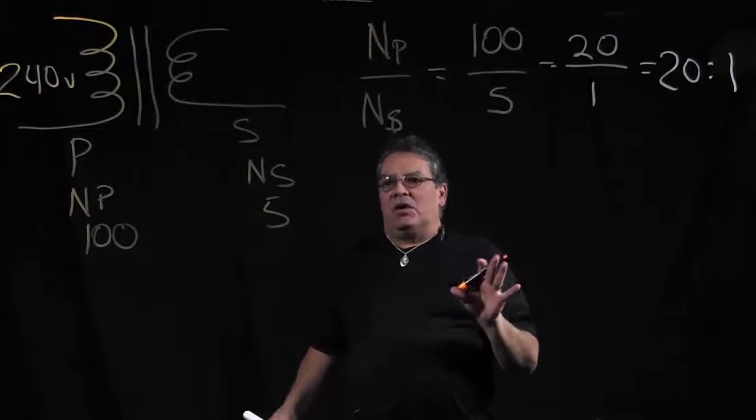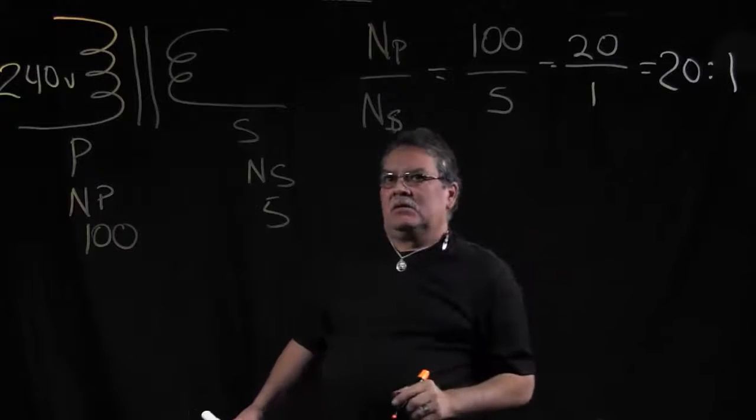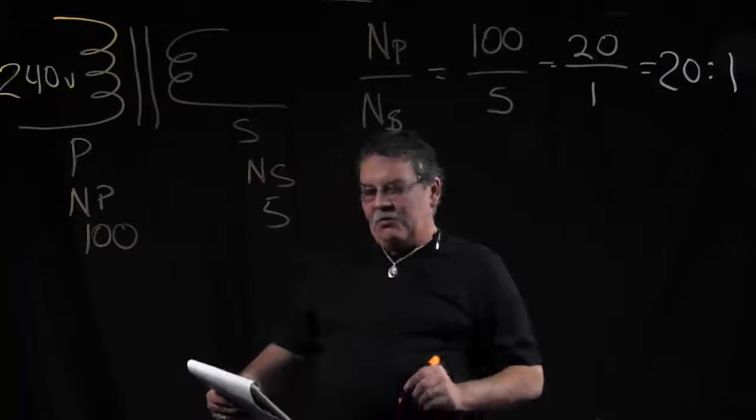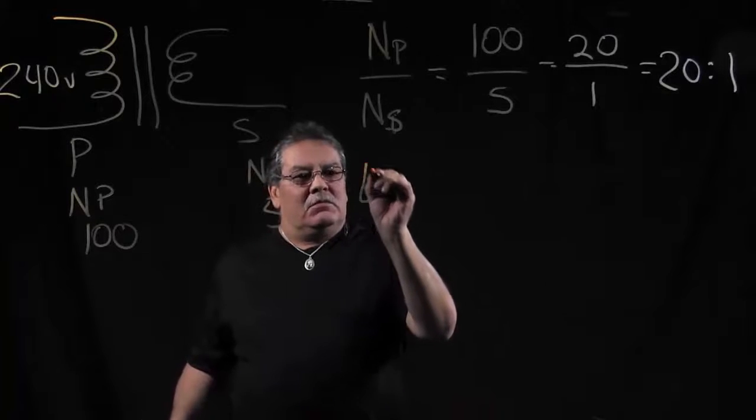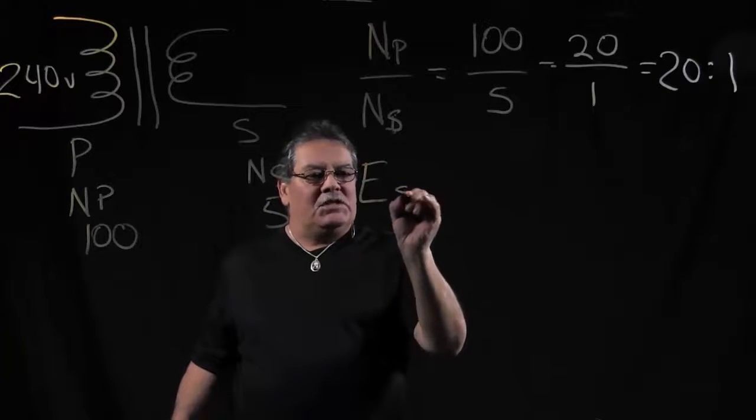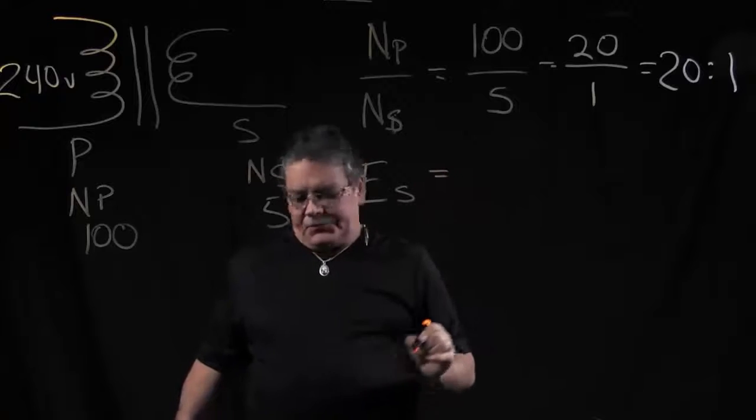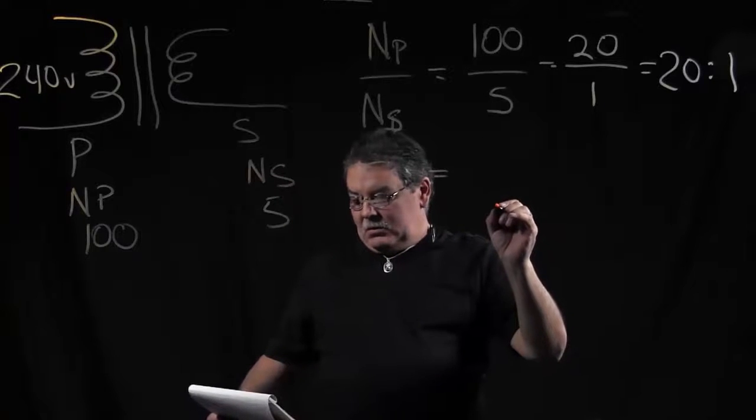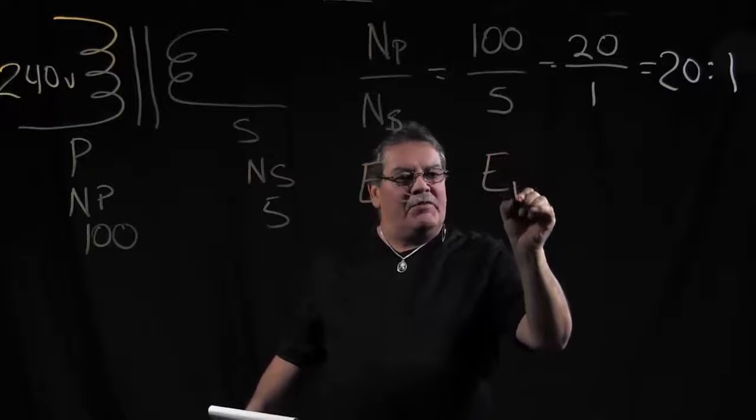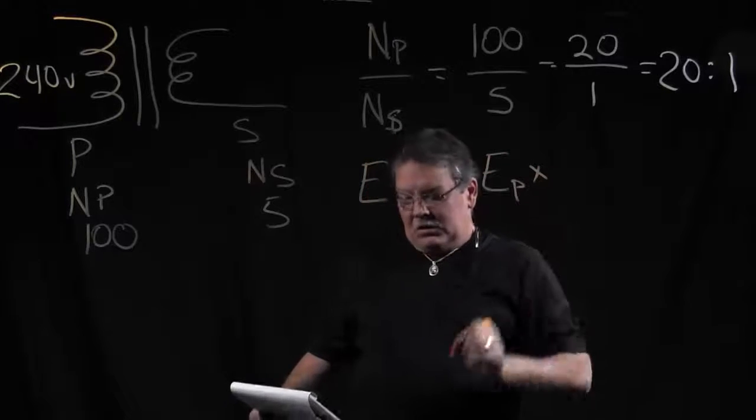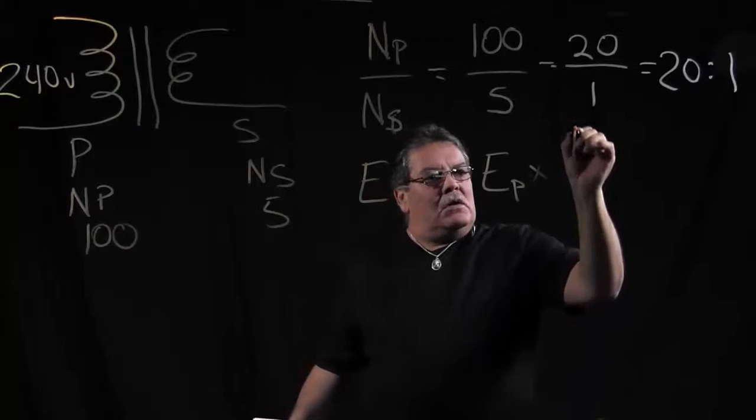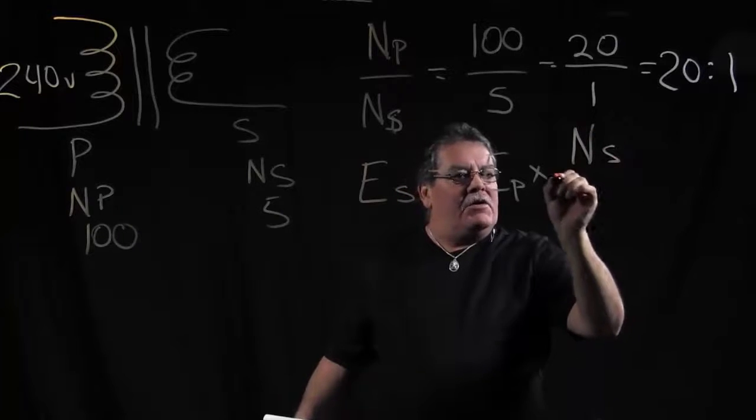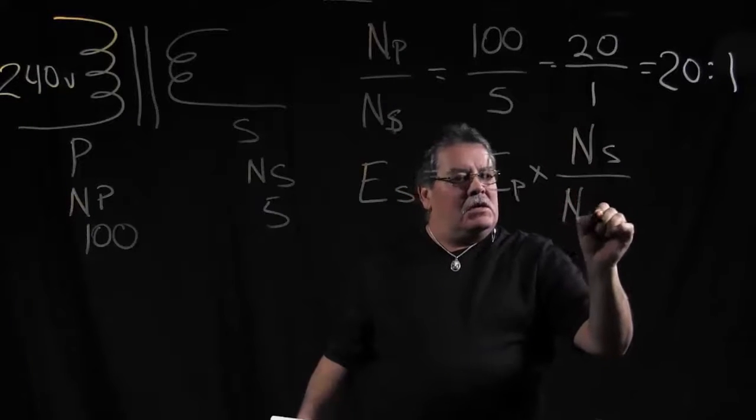Now, from there, we can calculate what our secondary voltage is. So we'll use a new formula for that, which is E, voltage in our secondary, is equal to our EP, which is our primary voltage, times our turns in the secondary over our turns in the primary.